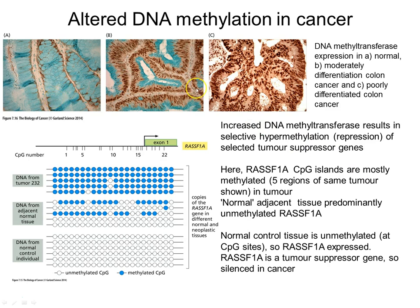Methylation can become dysregulated in disease. Tissue stained for DNA methyltransferase shows normal colon, aberrantly growing colon, and colon cancer. In cancer cells, DNA methyltransferase is overexpressed, causing CpG islands to become methylated and silencing genes that are a liability for the tumour — such as tumour suppressor genes. Tumours cannot grow while tumour suppressor genes like RASSF1A are expressed, so they overexpress DNA methyltransferase, methylate the CpG islands in the promoter regions of those genes, and silence them.